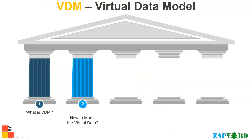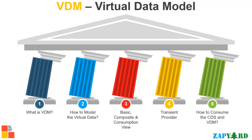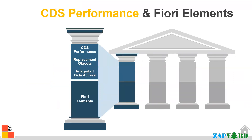CDS is the core of virtual data modeling. We will understand the basic interface, composite, and consumption view layers of VDM, learn about transient providers, and how to consume the VDM. We will practice consuming CDS and VDM in different consumption cases and in ABAP programs. CDS performance is one topic that needs special attention — if CDS is modeled wrong, it acts as a boomerang; even with S/4 HANA, a poorly modeled CDS query can perform worse than a non-HANA system query. We will teach you how not to model CDS and how to check CDS performance. Replacement objects is another important concept when working with CDS and we will cover that as well.